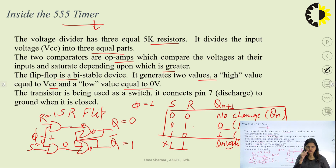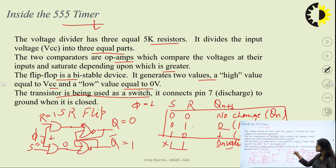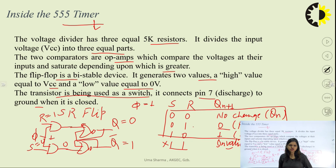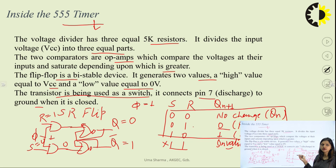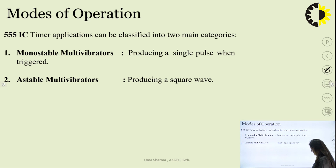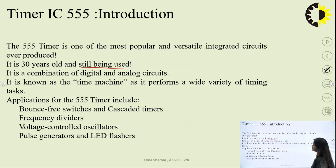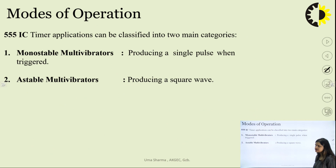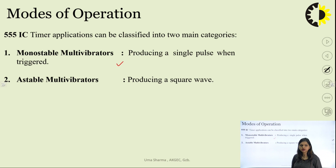A transistor is also used inside the 555 timer, used as a switch. It is connected to pin number 7, which is used to discharge the output node towards ground whenever the switch is closed. The internal components of the 555 timer IC are: a voltage divider, two comparators, one SR flip-flop, and a discharge transistor. This circuit can be used in both monostable and astable multivibrator configurations.